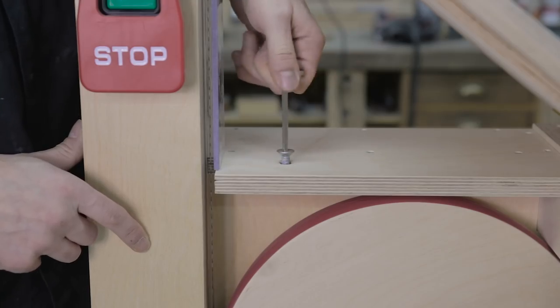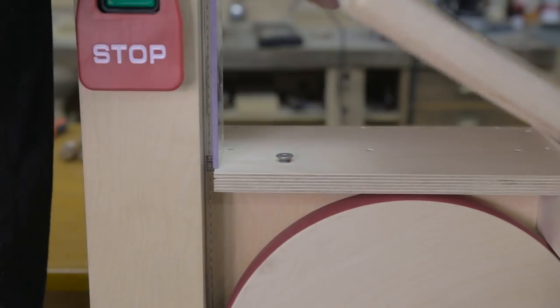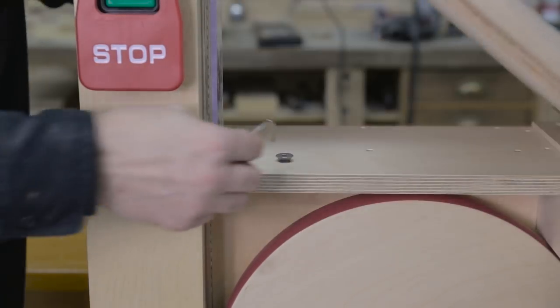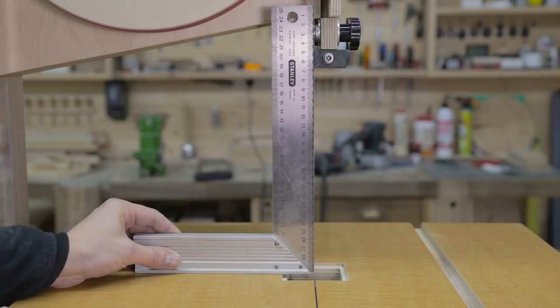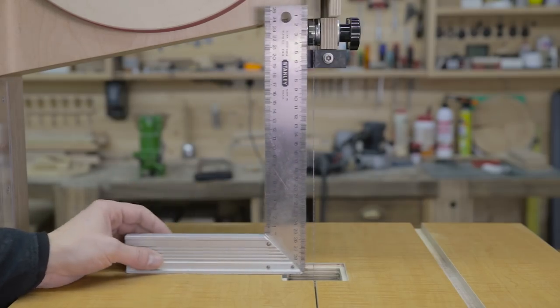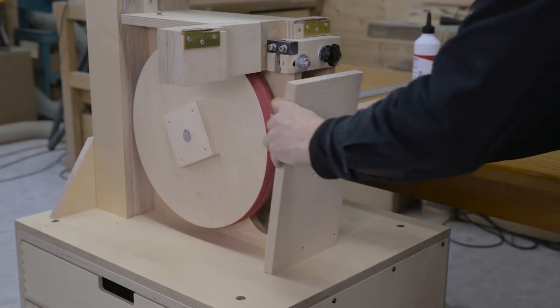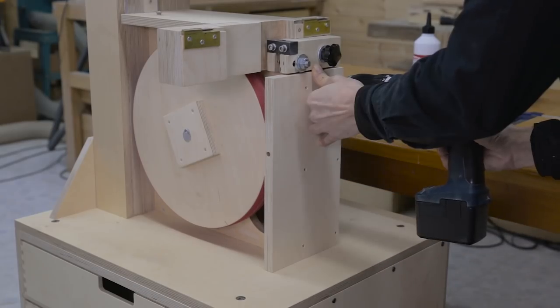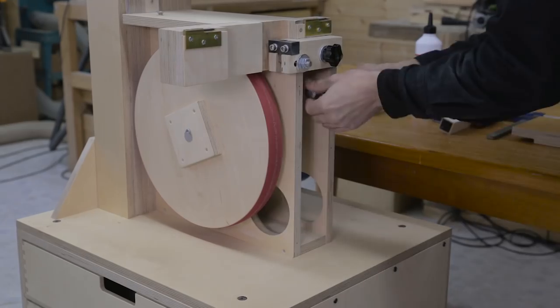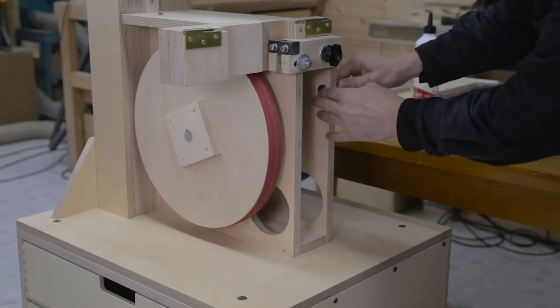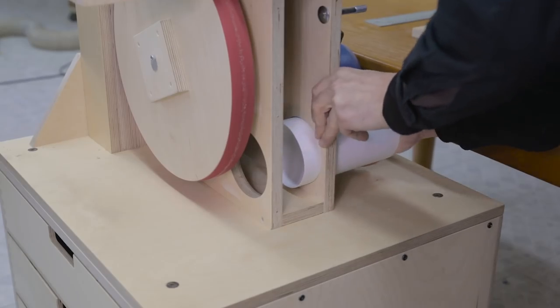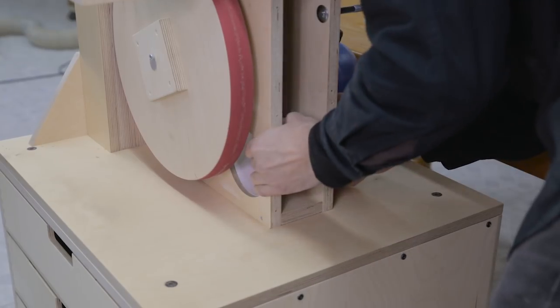This screw will act as a stop and help me adjust the angle of the table. I'm going to screw this part in its place, but before that, I'll put in the screw that locks the table and the dust collection pipe.